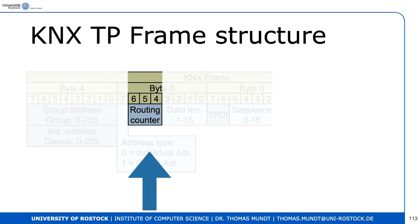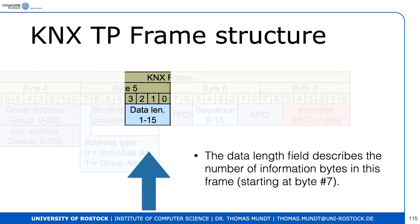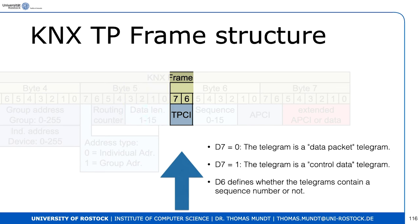We have a routing counter that determines how many hops remain. The counter is decremented every time a frame passes a coupler. At value zero, the frame is removed — it's similar to the time-to-live in IPv4 or hop count in IPv6. Passing a line coupler counts as part of the routing process. The data length field describes the number of information bytes in the frame, starting at byte 7.